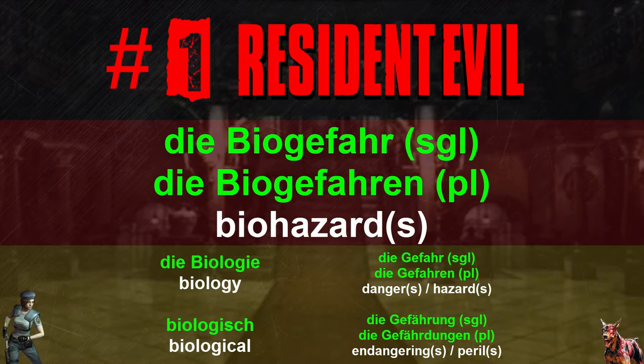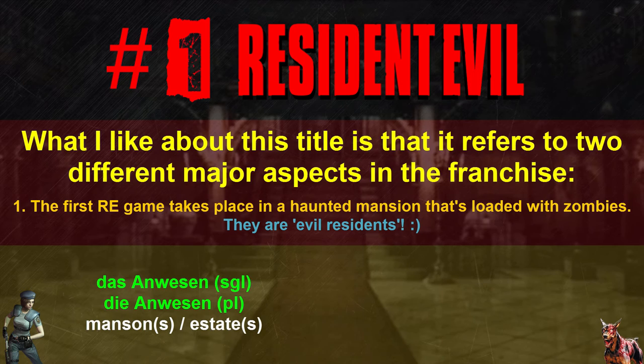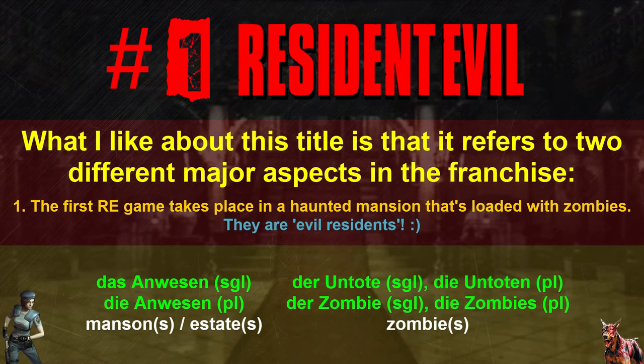The story in the very first Resident Evil game takes place in a mansion — das Anwesen — and well, there are zombies — der Untote or der Zombie. Evil Residents, so to speak. See what they did there?